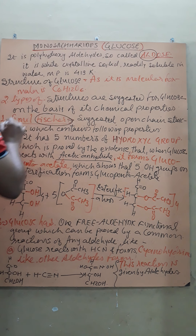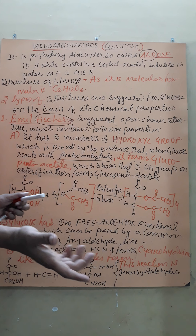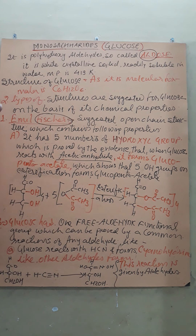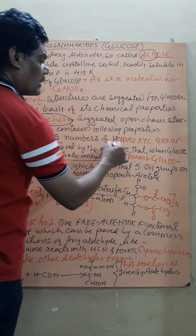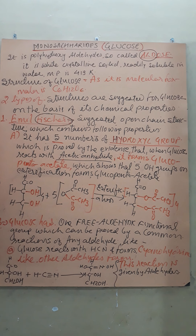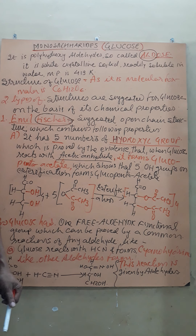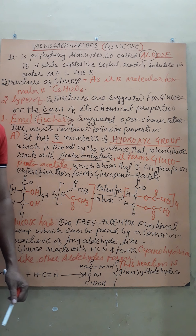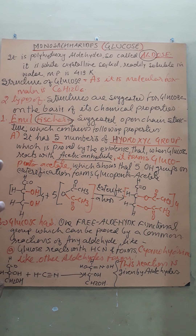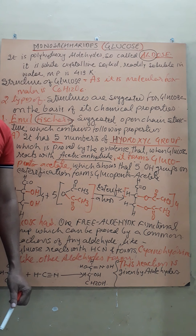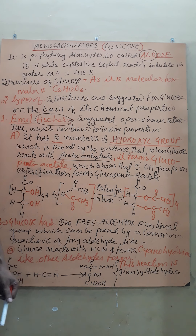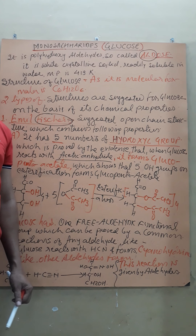One scientist suggested, on the basis of chemical reactions, three properties of glucose. First, it has five hydroxyl groups — out of these, four are secondary alcoholic groups and one is a primary alcoholic group. Second, glucose consists of one aldehyde functional group.